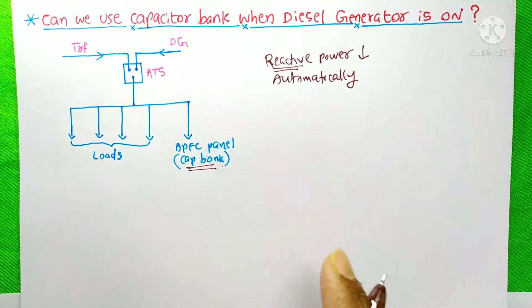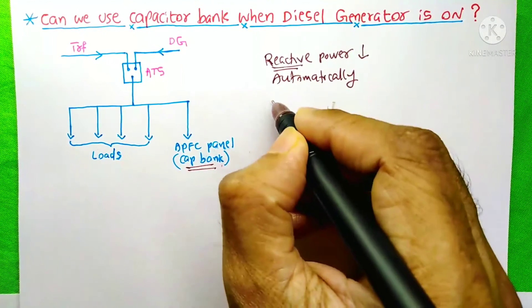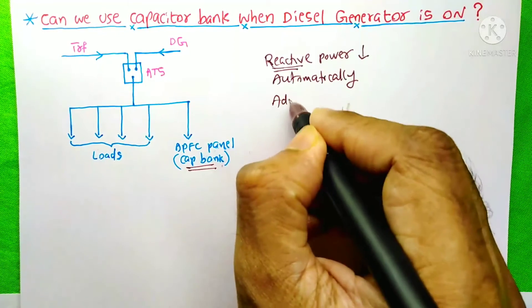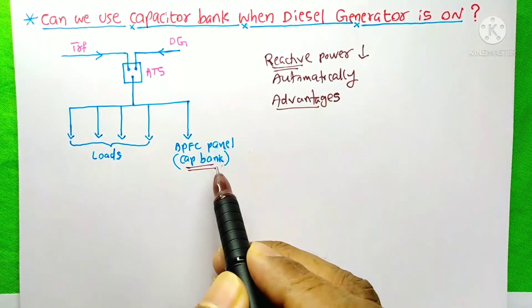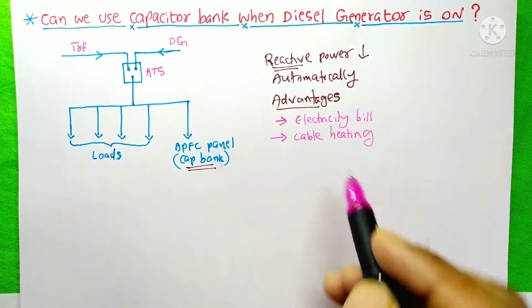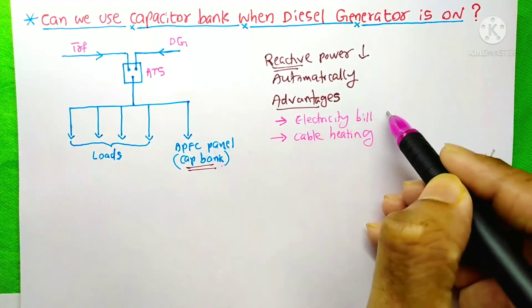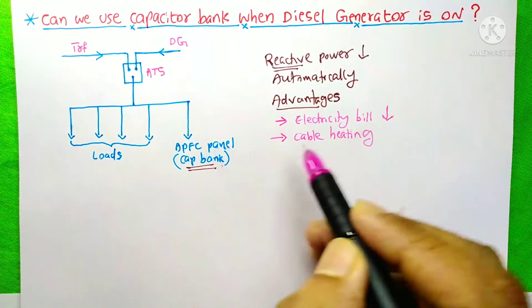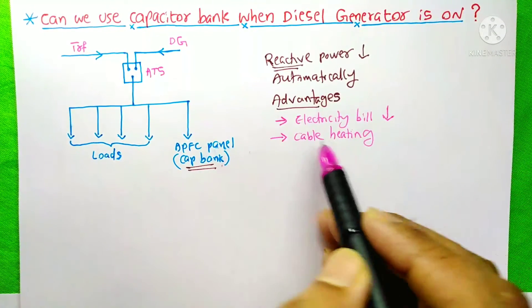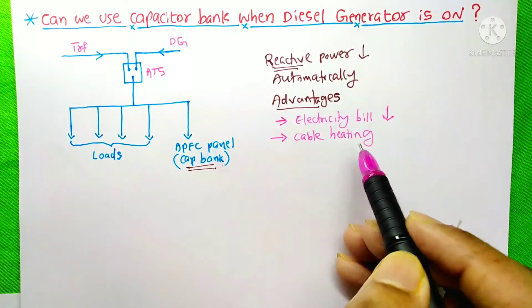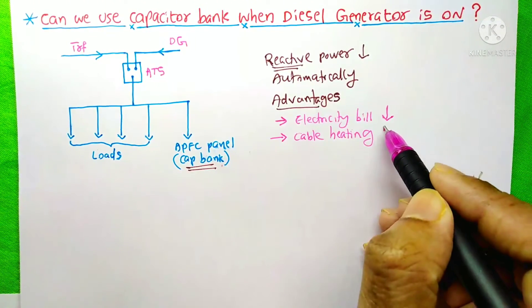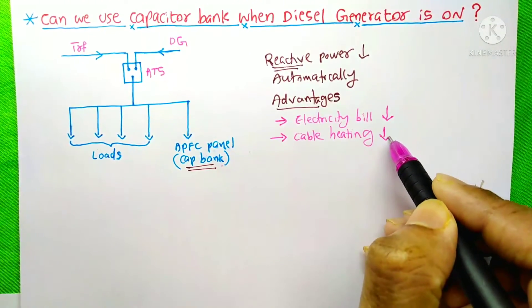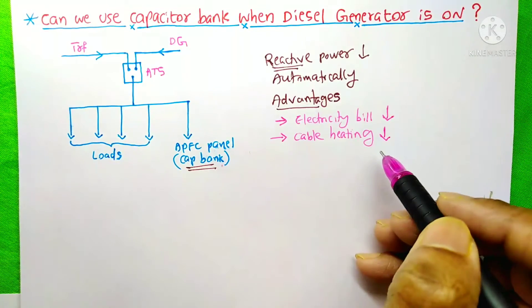There are several advantages of the capacitor bank. It will reduce the electricity bill, and the second advantage is that the cable heating problem will be less on our system.